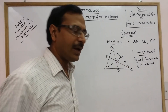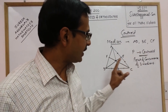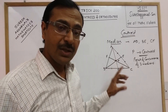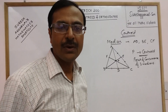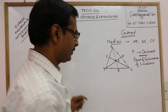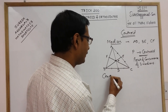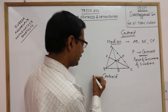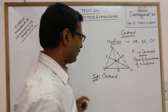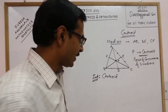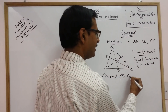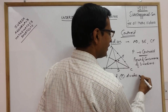So the centroid is the point where the three medians of a triangle intersect each other — it is the point of concurrence of the three medians. After understanding what the centroid is, we need to know one very important property of the centroid, on which many questions are based.